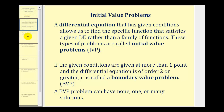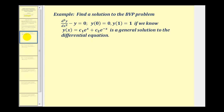Let's take a look at our first example. We want to find a solution to the given BVP: the second derivative of y with respect to x minus y equals zero, with y(0) = 0 and y(1) = 1. We're given that y(x) = c₁eˣ + c₂e⁻ˣ is a general solution to the differential equation. Using these two conditions, we want to find a particular solution.